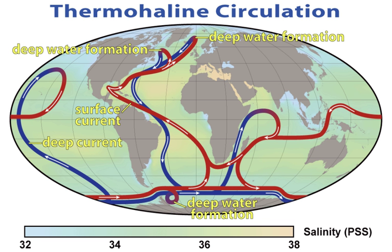Humans first acquired knowledge of the waves and currents of the seas and oceans in prehistoric times. Observations on tides were recorded by Aristotle and Strabo. Early exploration of the oceans was primarily for cartography and mainly limited to its surfaces and of the animals that fishermen brought up in nets, though depth soundings by lead line were taken.